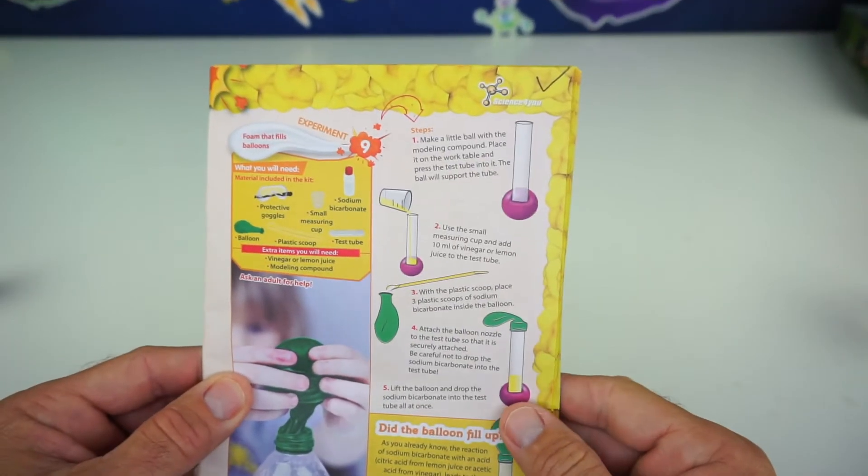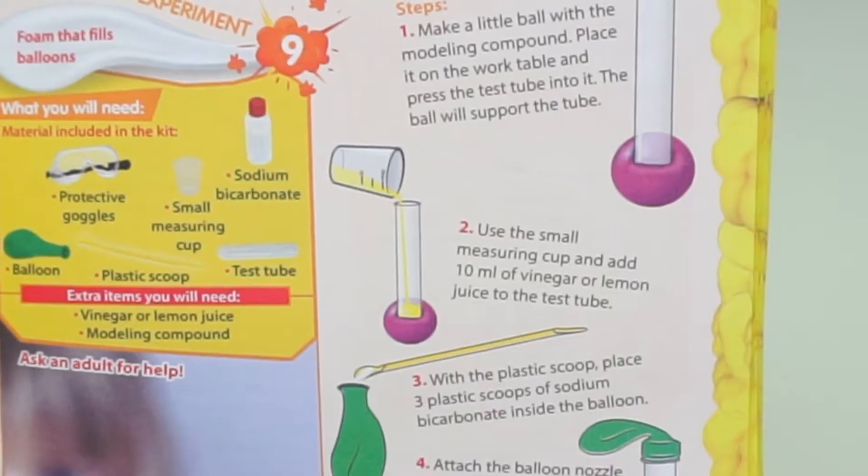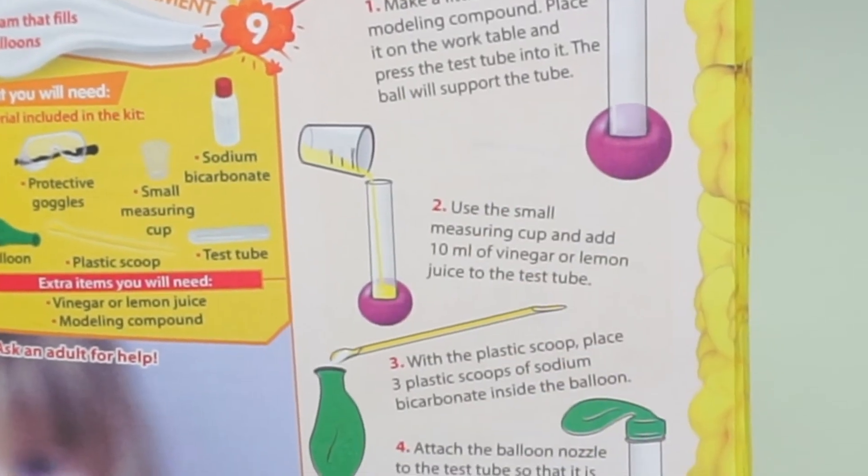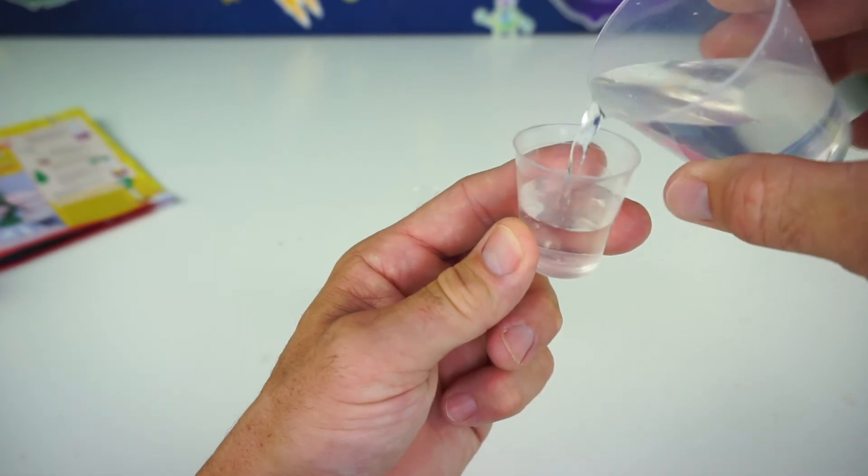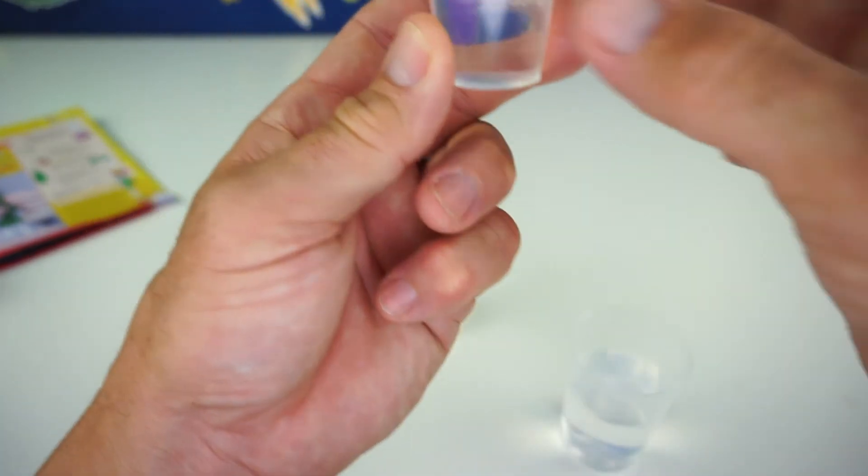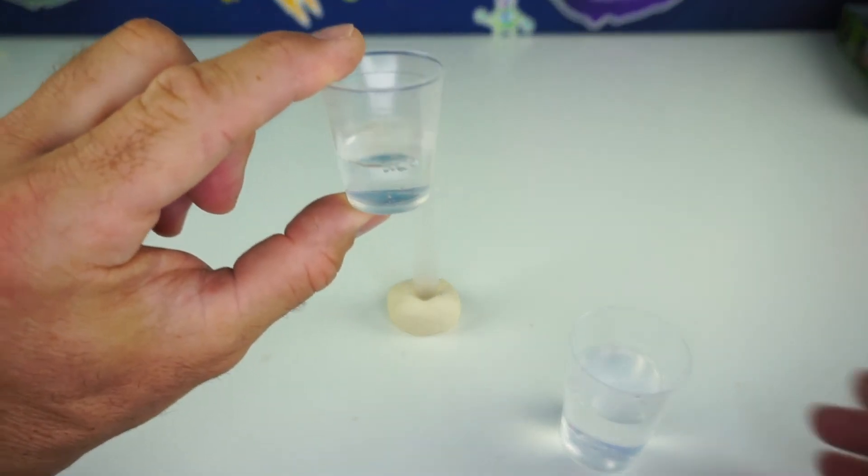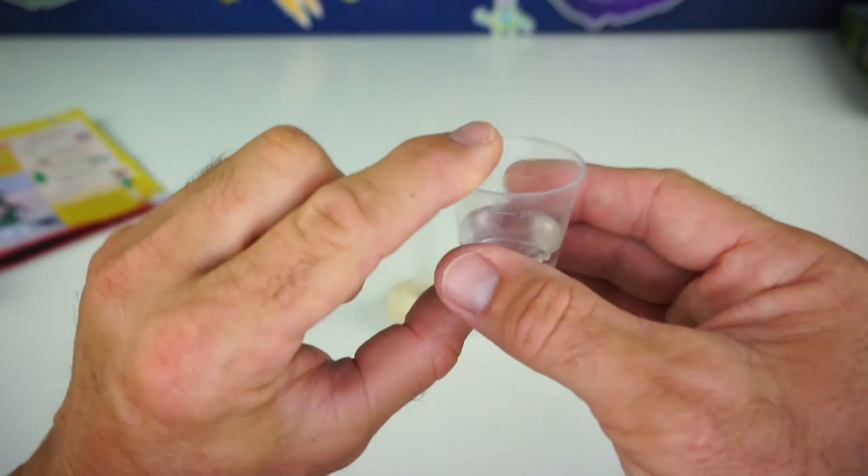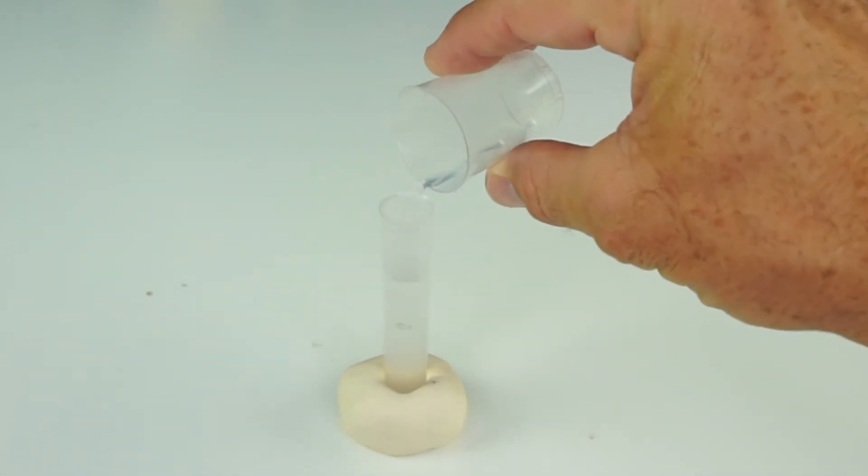Next step we will need to do is use the small measuring cup to add 10 milliliters of vinegar or lemon juice to the test tube. Taking my vinegar and pouring 10 milliliters into this measuring cup. Oops, too much. Let's pour a little back. And that right there is 10 milliliters of white vinegar. Let's put it right in the test tube. Careful. Alright.